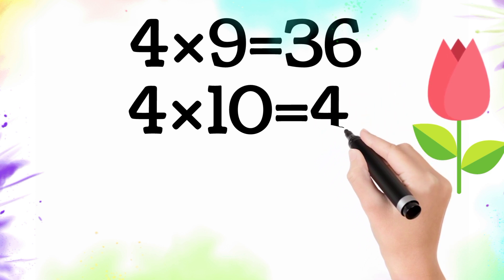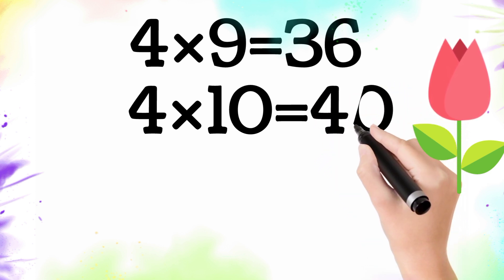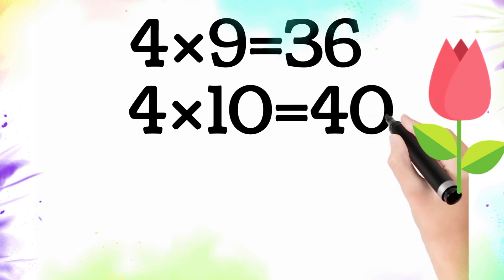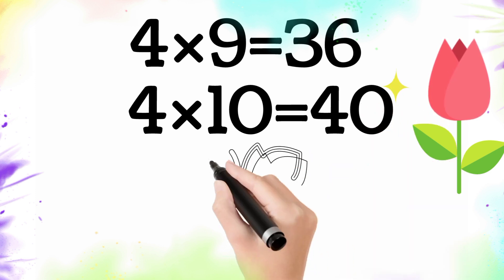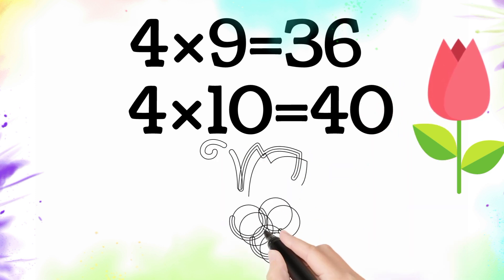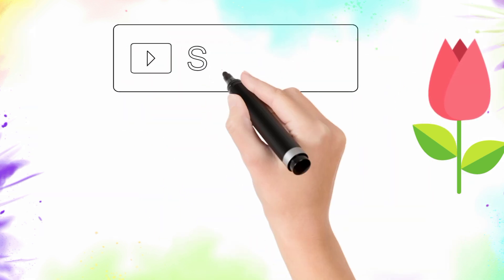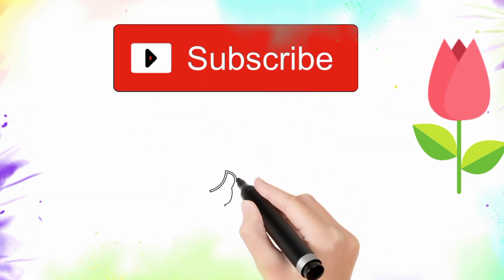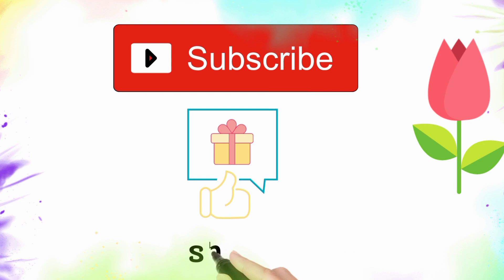So four times ten is equal to forty. Kids, I hope this video is helpful for you. Please subscribe to my channel, like this video and share. Thank you for watching.